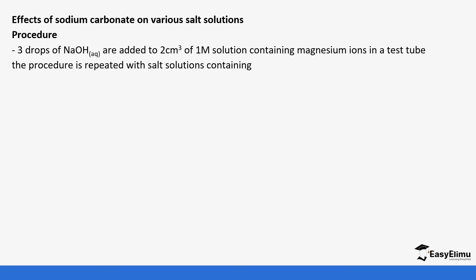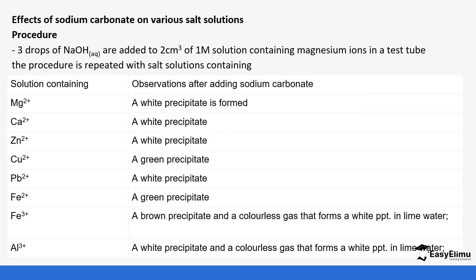If you add a few drops of sodium carbonate to solutions containing these metal ions, magnesium forms a white precipitate of magnesium carbonate, calcium carbonate is a white precipitate, zinc carbonate is a white precipitate, copper carbonate is a green precipitate, lead carbonate is a white precipitate, iron(II) carbonate is a green precipitate, and iron(III) carbonate is a brown precipitate — and it also gives off a colorless gas, carbon dioxide. Aluminium carbonate gives a white precipitate.